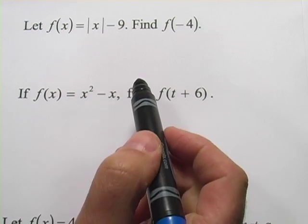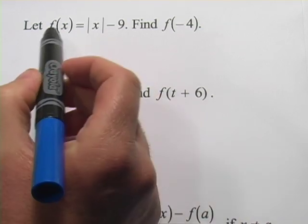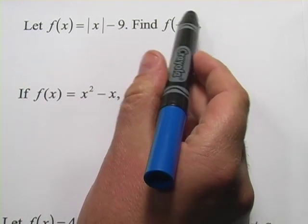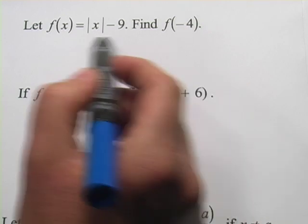In these problems, we're evaluating some functions for given values. So, if I have a function f of x, and I want to find f of negative 4, I'm just going to put in negative 4 wherever I see x in the function.